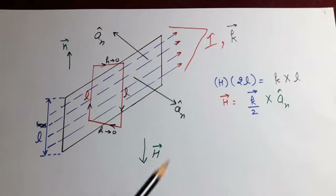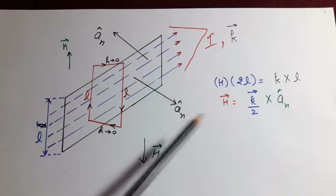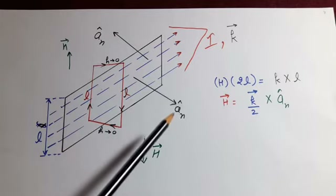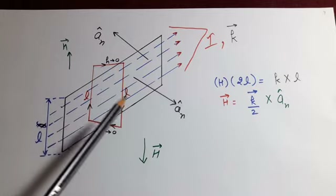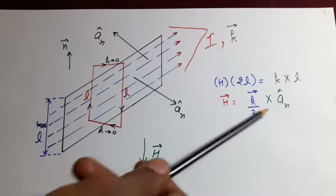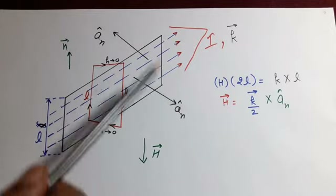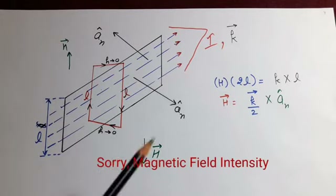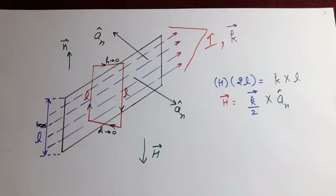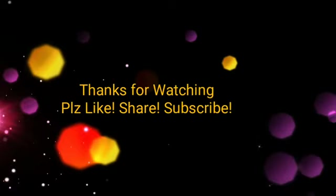This is very important and we use it when we study boundary conditions for magnetic fields. In short, for a sheet current with surface current density k, the magnetic field intensity H equals k upon 2 cross a_n, where a_n is the normal vector taken on the side where we want to calculate the field. Friends, we stop here. In the next lecture we will learn about boundary conditions for magnetic fields. Please like the video, subscribe to the channel, and thanks for watching. Goodbye.